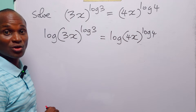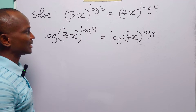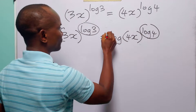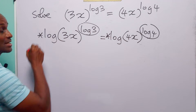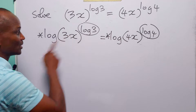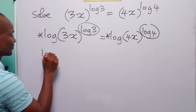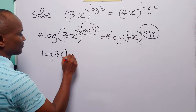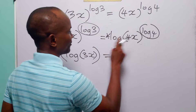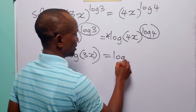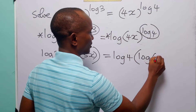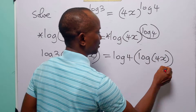The next step to solving this equation is to apply the power rule of logarithms — the rule that says we can bring down the exponents to the front of the log to become multipliers. When we apply this rule to the left-hand side, we have log 3 times log 3x, and on the right-hand side, we have log 4 times log 4x.